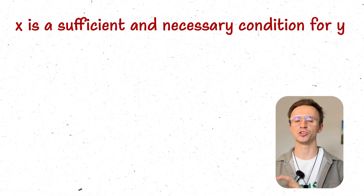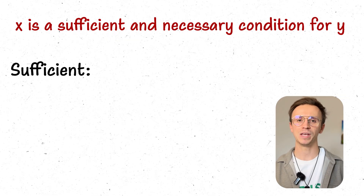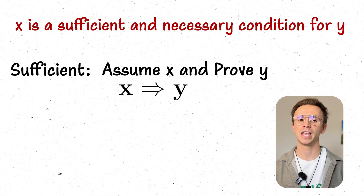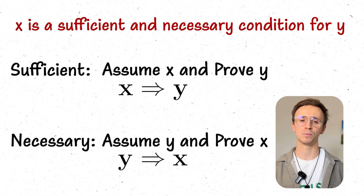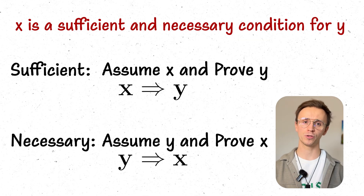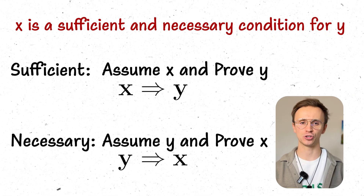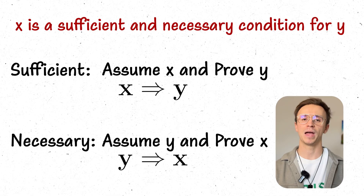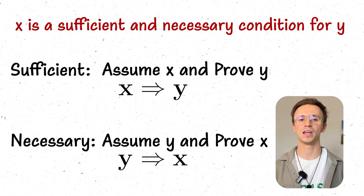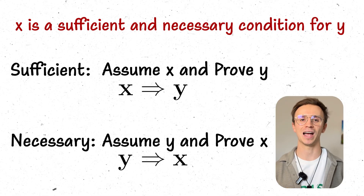So what do you actually do if a question asks about necessary and sufficient conditions? If x is a sufficient and necessary condition for y: assume x and prove y — that gives you sufficient. Assume y and prove x — that gives you necessary. Prove both and x is necessary and sufficient. So x to y implies sufficient, y to x implies necessary, and proving both gives necessary and sufficient.